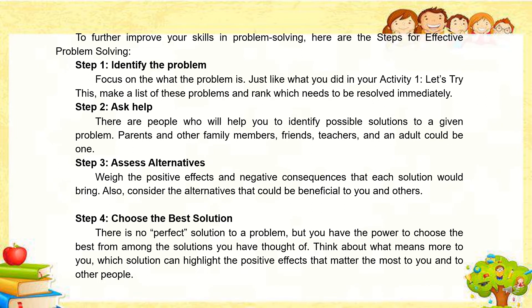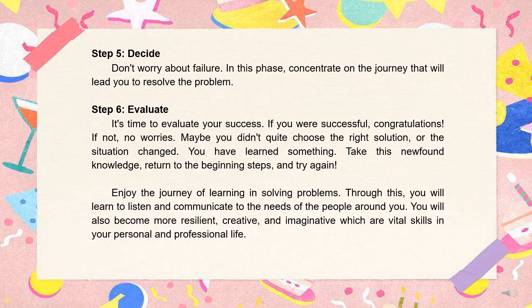Step 4: Choose the best solution — there is no perfect solution to a problem, but you have the power to choose the best from among the solutions you have thought of. Think about what means more to you, and which solution can highlight the positive effects that matter the most to you and to other people. Step 5: Decide — don't worry about failure. Concentrate on the journey that will lead you to resolve the problem. Step 6: Evaluate — it's time to evaluate your success. If you were successful, congratulations! If not, no worries. Maybe you didn't choose the right solution, or the situation changed. You have learned something. Take this newfound knowledge, return to the beginning steps, and try again. Enjoy the journey of learning in solving problems.